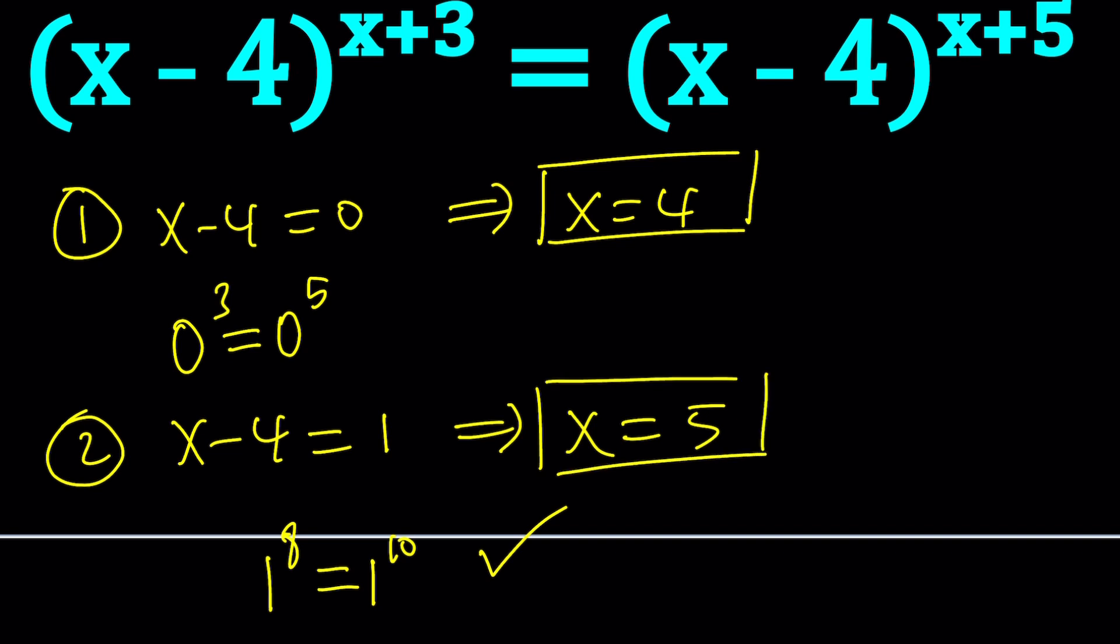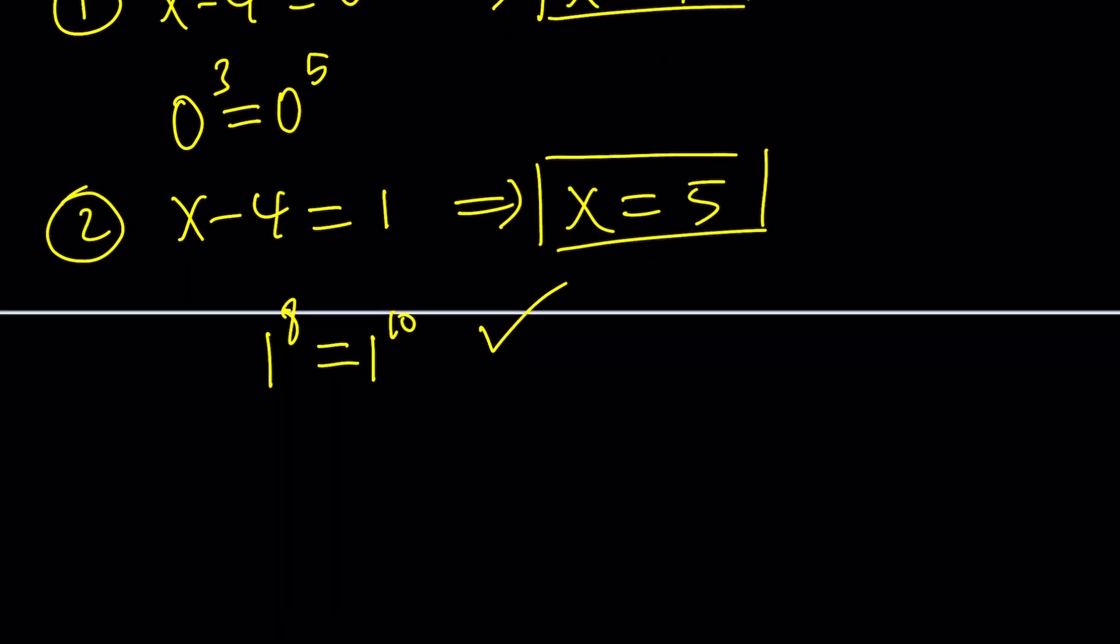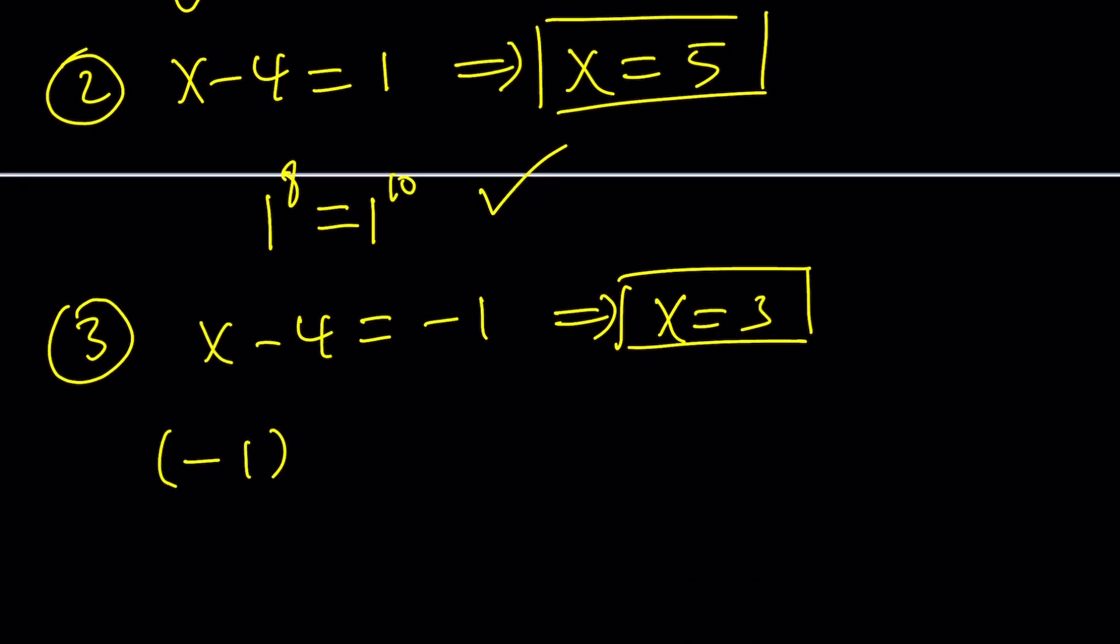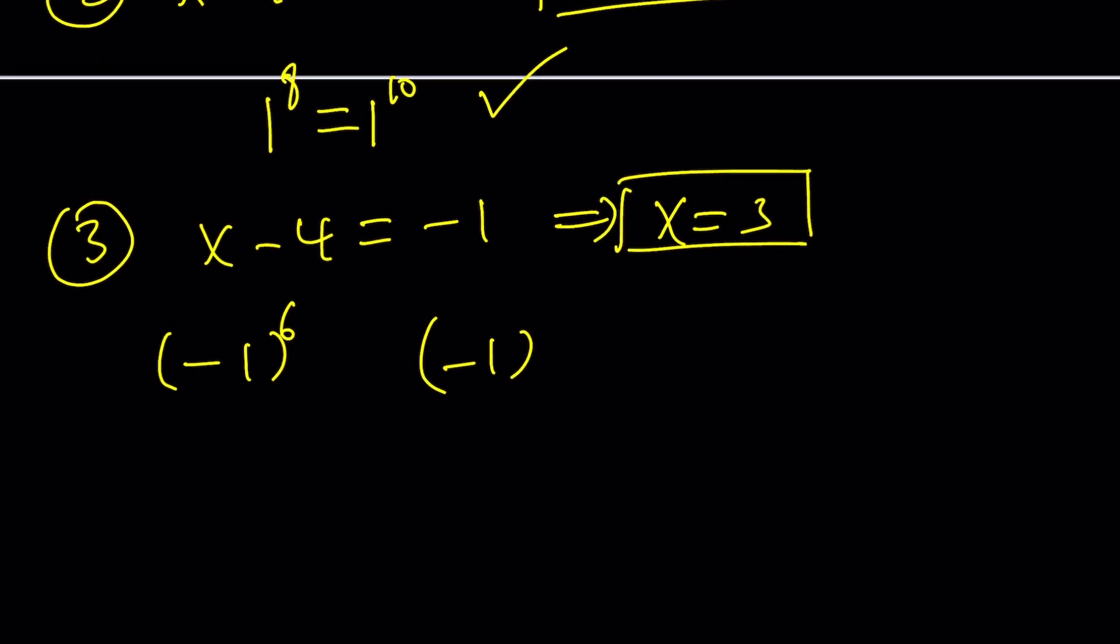And then we're just going to check the negative 1 case. What if x minus 4 is equal to negative 1? From here, x becomes 3. So if x is 3, then we get negative 1 to the power 6 and negative 1 to the power 8. And they're both equal to 1, so they're equal, which means x equals 3 is another solution.